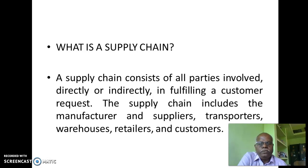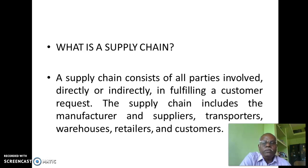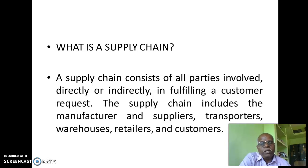A supply chain consists of all parties involved directly or indirectly in fulfilling a customer request. The supply chain includes the manufacturer and suppliers, transporters, warehouses, retailers, and customers. Going back to our earlier example, the customer's request was to get a biscuit of his choice. If the supply chain is working properly with all these parties, then only the customer is able to get the product at a shop, supermarket, or any other selling place.